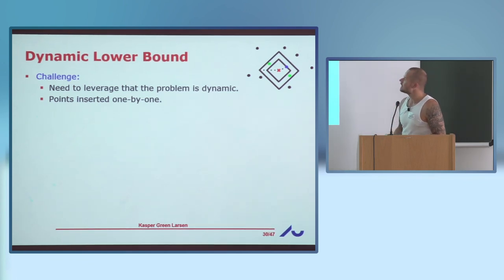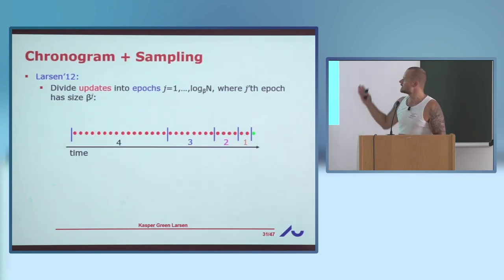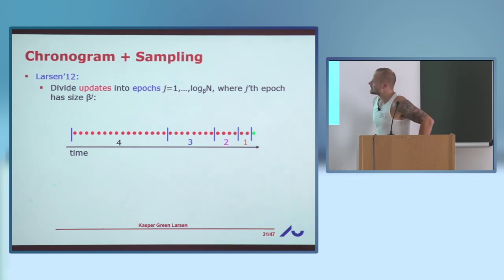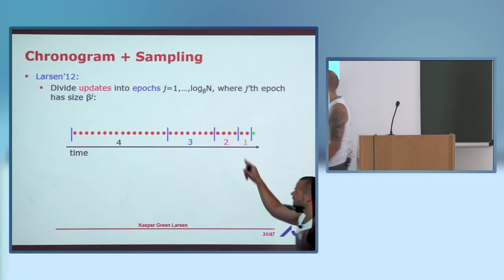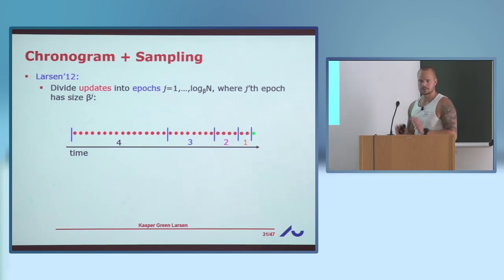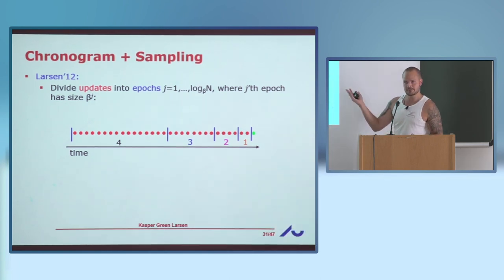Now let's see how one can lift this to an even stronger dynamic lower bound. In the dynamic case, points are inserted one by one, and at any given time I should be able to answer queries, with update time T_u for each insertion. We take a technique from 2012 which is a combination of the chronogram technique and this sampling idea. In the chronogram technique, I consider a bunch of insertions — all the red dots — done one by one as time moves left to right, and at the end I have a query. I divide these updates into what we call epochs, where the j-th epoch has size β^j for some parameter β. The sizes decrease geometrically as you move toward the query time, going down by a factor β each time you move one epoch ahead.